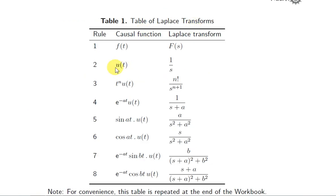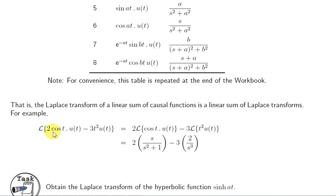Here is a table of Laplace transforms. We've proven numbers 2, 3, and 4. In general, the causal function is small f(t) and its transform is big F(s). In this example, we want L of 2cos(t)u(t) minus 3t² u(t). Using linearity, we pull the 2 out and get 2 times L of cos(t). Looking that up in the table, cos(at) has Laplace transform s over s squared plus a squared. In this situation a is 1, so we get s over s squared plus 1.